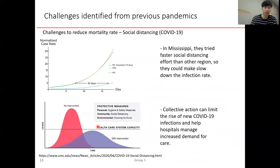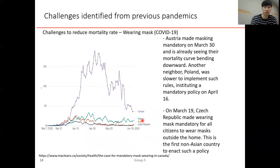This is the famous flatten-the-curve graph from COVID-19, showing that protective measures — such as social distancing, cleaning services, and other interventions — can limit the rise of new COVID-19 cases.